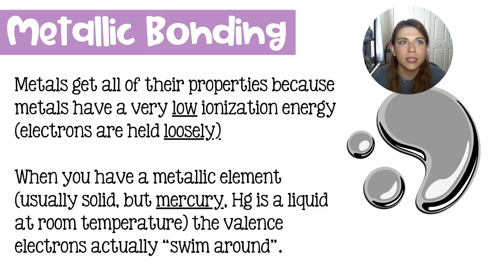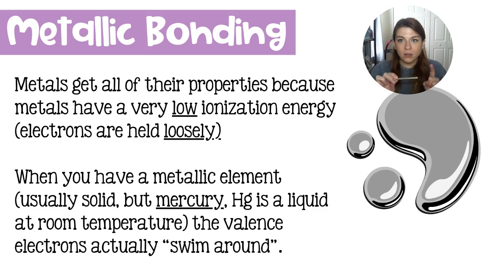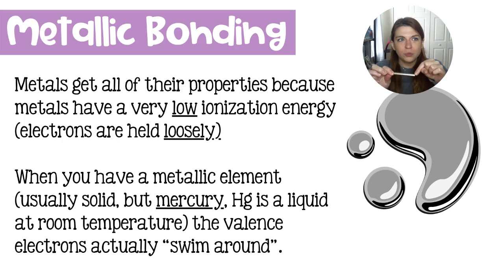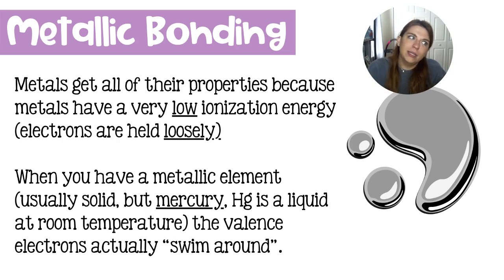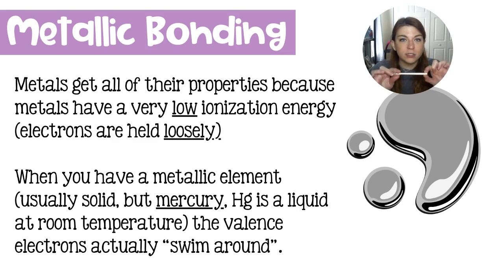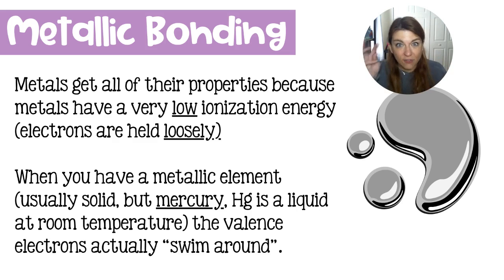In any sample of metal — like here I have an exacto knife — these metal atoms are going to kind of hot potato their electrons from one atom to the next. The atoms are not very attached to their valence electrons, so this atom is going to push its electrons into a neighboring atom to try to get rid of them, but at the same time its neighbor just threw an electron over to it. So the electrons through this entire metal sample are all just kind of swimming around — valence electrons don't really have a specific atom that they belong to; they belong to the sample.